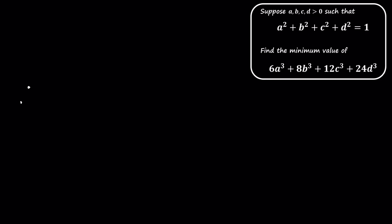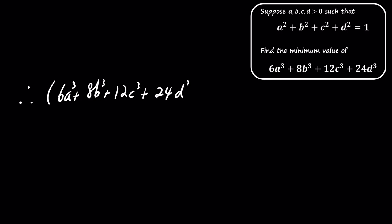Substituting these values back into the expression confirms that the minimum value of k is indeed 24 over the square root of 30. So, the minimum value of 6a cubed plus 8b cubed plus 12c cubed plus 24d cubed is 24 over the square root of 30.